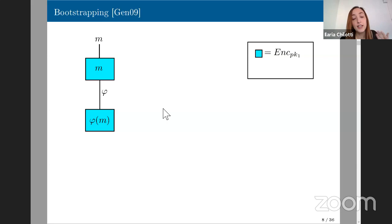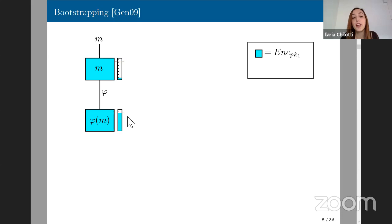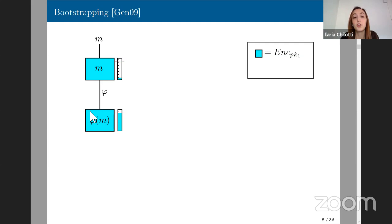After evaluating phi, the result is an encryption of phi(M). At the beginning of computation, there's a small amount of noise in the ciphertext for security reasons, and this noise grows as we perform computations. If phi involves enough computations, we reach a limit — shown as a red line — beyond which even a single additional operation might prevent correct decryption. The easiest way to get rid of the noise is to decrypt the ciphertext — but if you're doing operations on the cloud, you'd have to give the server the secret key, which defeats the purpose of encryption.